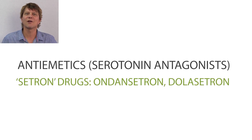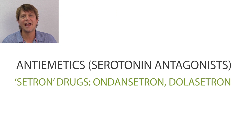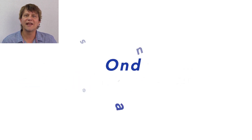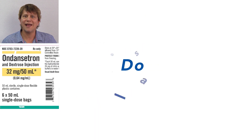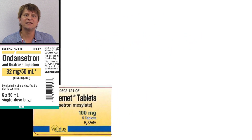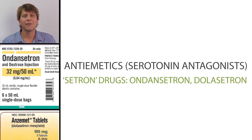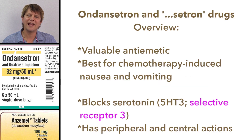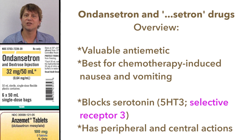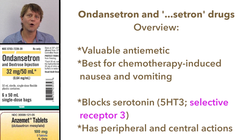G'day. It's great to have you join us as we talk about the serotonin antagonists that act as anti-emetics. Ondansetron, dolasetron, and other drugs that end in the suffix -SETRON are anti-emetics that decrease nausea and vomiting. Ondansetron is one of the most commonly used anti-emetics. It's on the World Health Organization's list of essential medications and it acts both centrally and peripherally to be a very effective medication in controlling chemotherapy-induced nausea and vomiting.